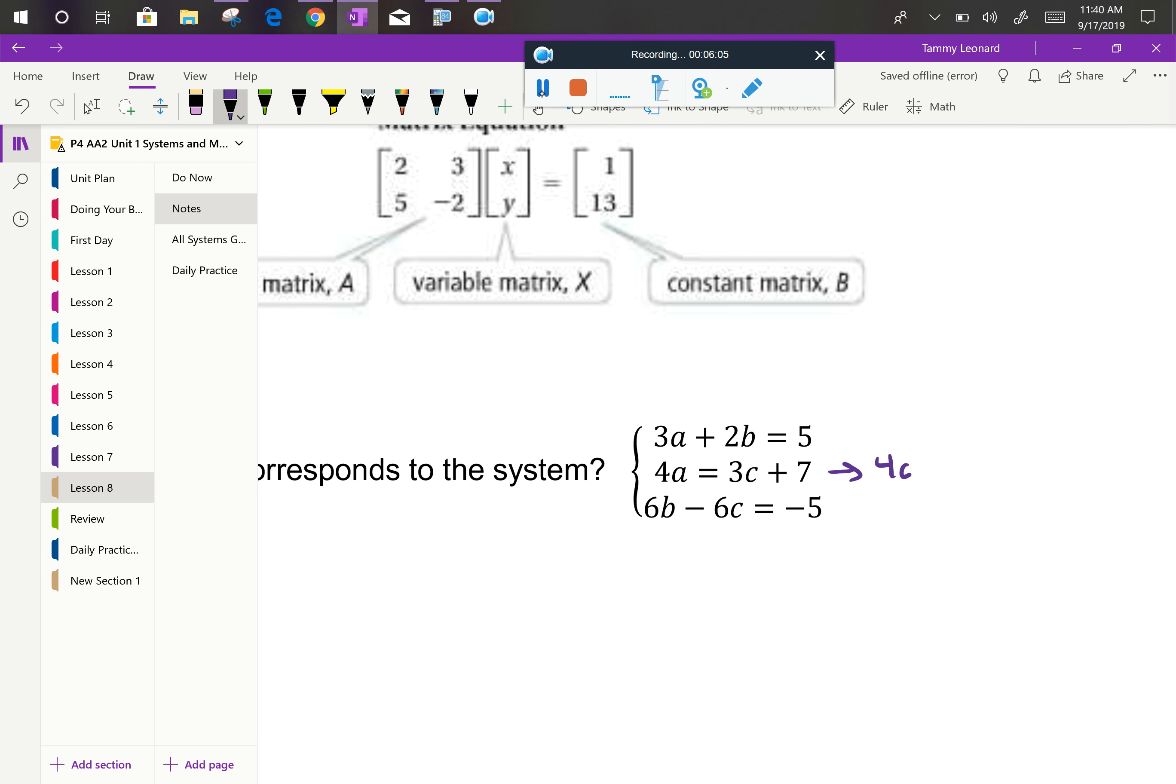So when I think about it, I'm going to think of A minus 3C equals 7. The other ones are in an acceptable order. But when I go to my matrix, I'm first going to have a coefficient matrix. Now the first row is 3, 2, 0. What's my second row? 4, 0, negative 3. And my third row? 0, 6, negative 6. Then I'm going to have my variable matrix, which is going to be A, B, C. Then I'm going to have my constant matrix, which will be 5, 7, negative 5. How are we doing?